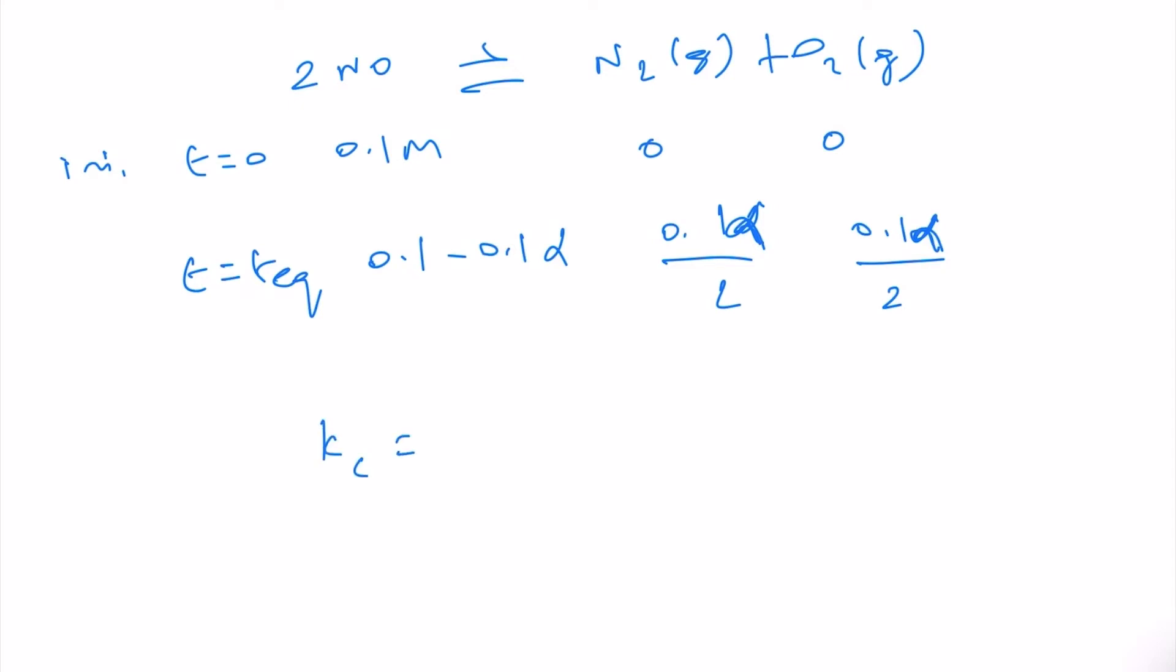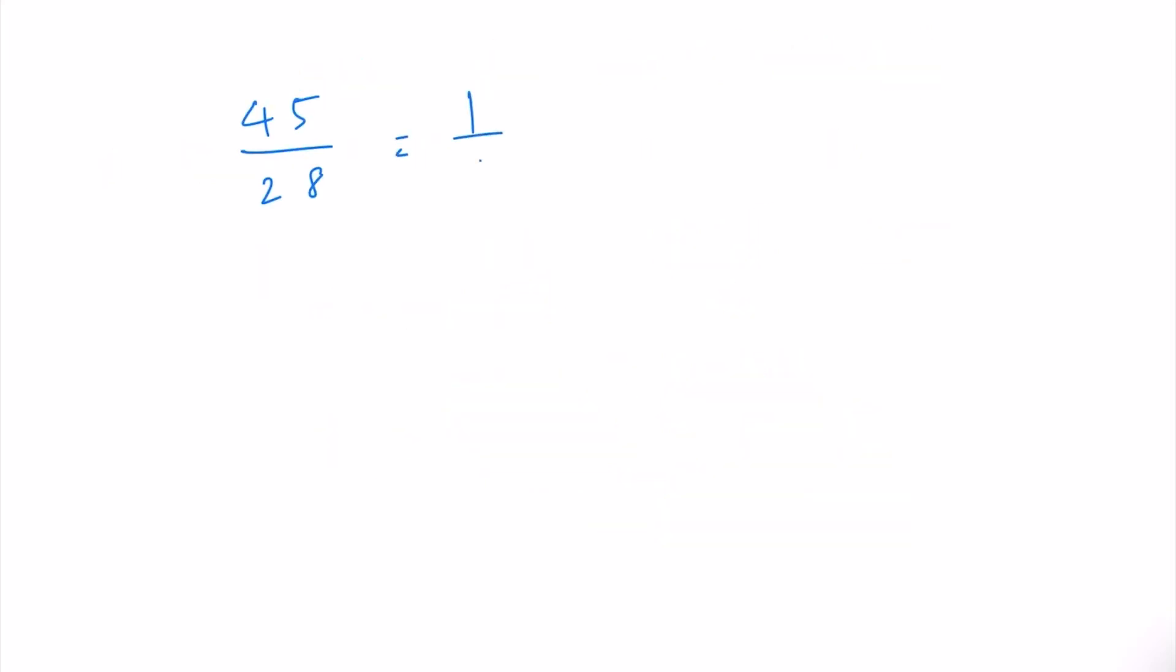Now, if we go for Kc then this is 0.1 alpha by 2 times 0.1 alpha by 2 divided by let us write this one as 0.1 times 1 minus alpha. So this will be 0.1 square 1 minus alpha whole square and therefore, this will be 0.1 square cancels out and therefore, this will be 45 divided by 7 times alpha square divided by 1 minus alpha whole square.